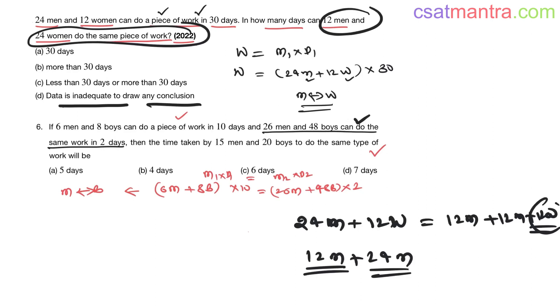We cannot say anything—more than 30 days or less than 30 days, we cannot say anything. Please watch this problem; everything would be clear to you. When you have a relationship between m and b, you can find what is the total work done in terms of m or b and equate this to find out the d value.